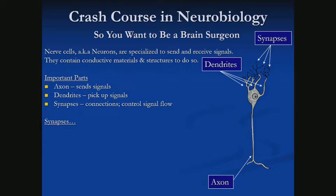In our brain, the synapses are what learn — or how we control learning. How much signal flow is allowed to go through controls what the neuron ultimately does.